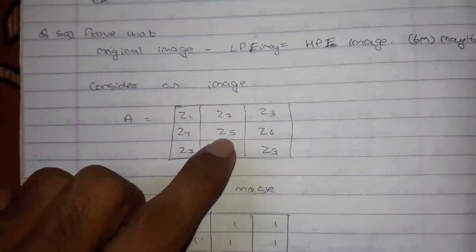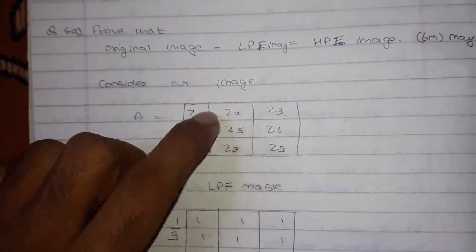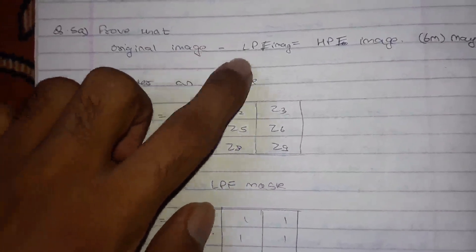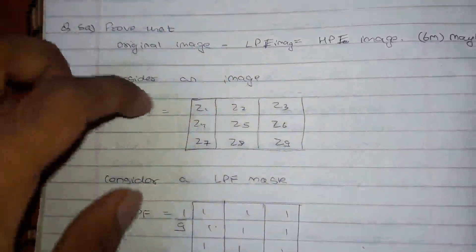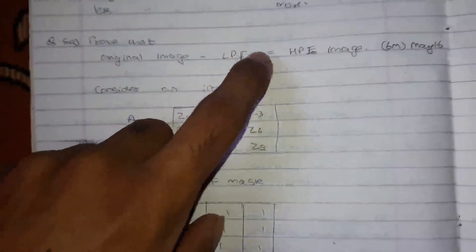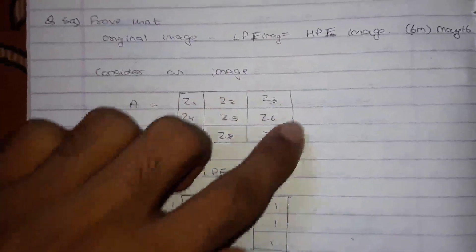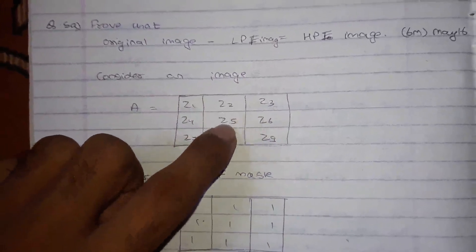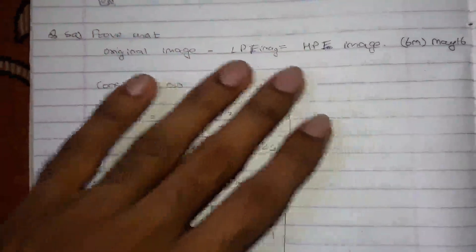In this video, I am going to prove that original image — that means pixel Z5 — minus low pass filtered image: what will happen if you pass a low pass filter through this image, what will be the effect on Z5, and that will be equal to when I pass a high pass filter on this image, the effect on Z5. We can see that those would be equal, and in this way we can prove original minus low pass image equals high pass image. Let's get started.